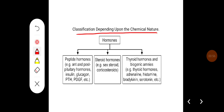Classification of hormones depends mainly on their chemical nature. Hormones can be divided into peptide hormones, steroid hormones, and thyroid hormones. Peptide hormones include, for example, anterior and posterior pituitary hormones, insulin, and glucagon. Steroids or corticosteroids, thyroid hormones, and biogenic amines include, for example, adrenaline, histamine, bradykinin, serotonin, etc.